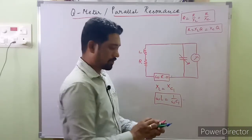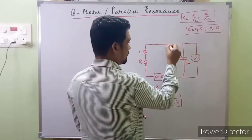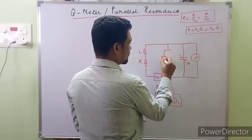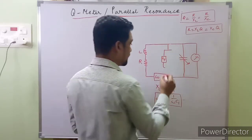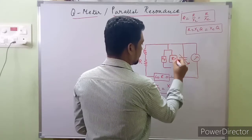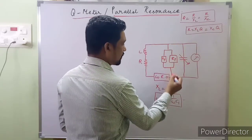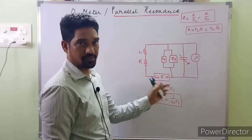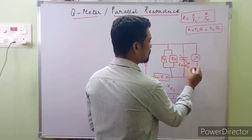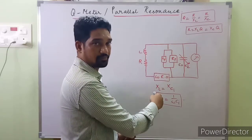Now introducing the unknown impedance — whose quality factor is to be determined — in parallel to the capacitor. This is how we connect that unknown impedance XP. It will have values XP and RP, and this ratio gives us the quality factor of the unknown impedance QP. Changing the value C to another level C2 and obtaining the resonance condition of the circuit — let's start the derivation.